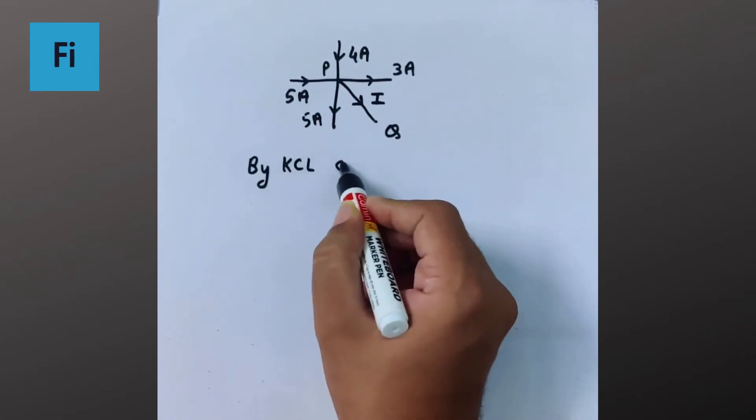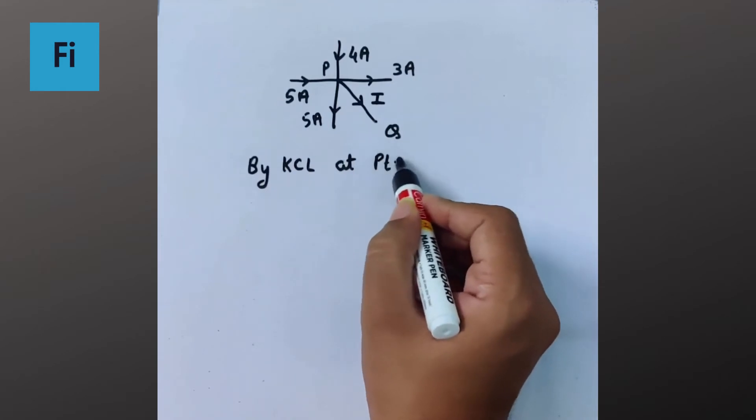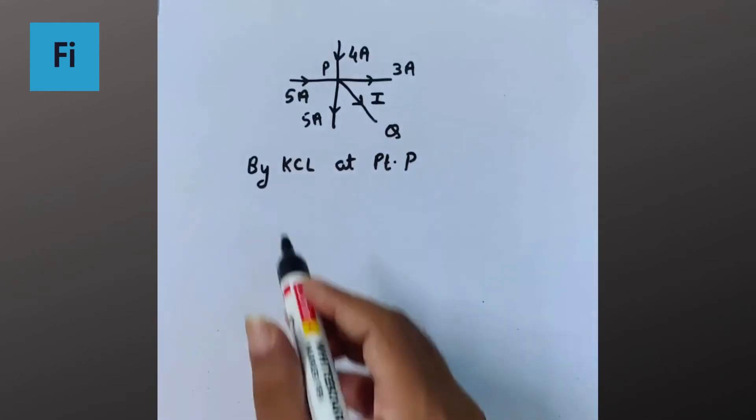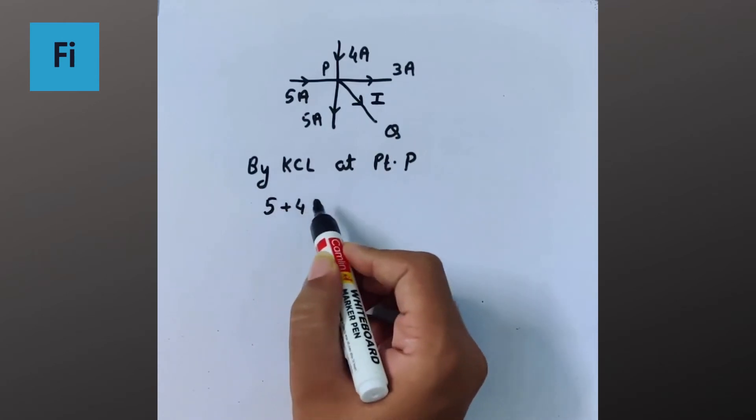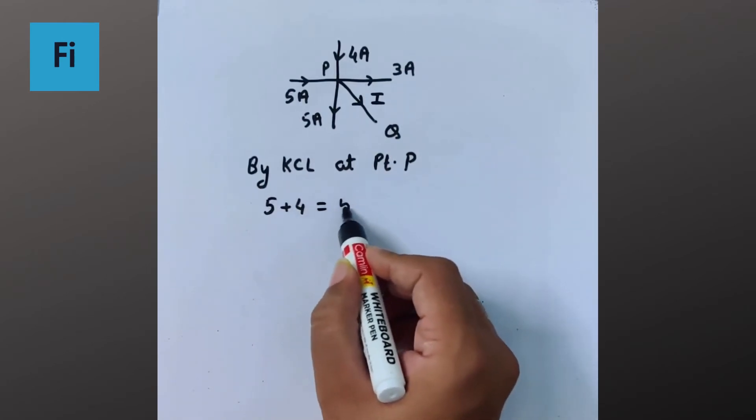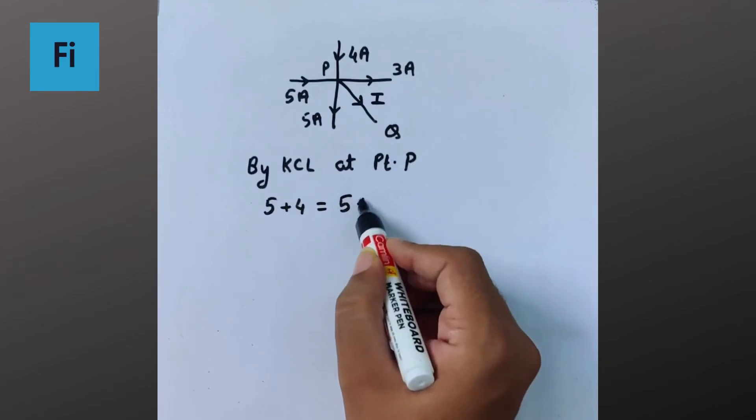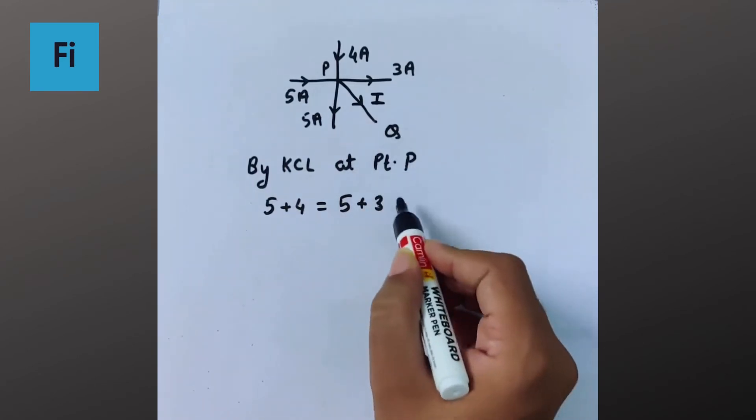I can say the 5 ampere is incoming current plus 4 ampere is incoming current, which is equal to 5 ampere is outgoing current plus 3 ampere outgoing current plus I going outgoing.